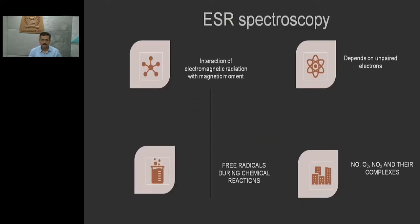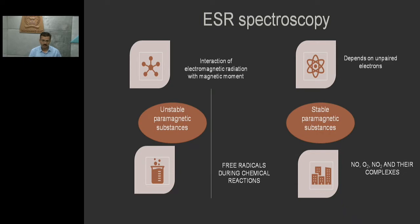Next, where does this ESR spectroscopy work? It is the electromagnetic interaction with stable magnetic moments. There are two types of paramagnetic substances: one is stable, another is unstable. Unstable compounds have free radicals during chemical reactions, while stable compounds include N2O, NO2 and other complexes. Basically, ESR spectroscopy mainly deals with or depends on the number of unpaired electrons.